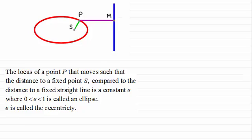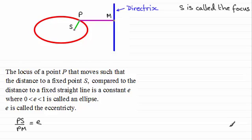Now that ratio PS to PM always equals that constant E, and you should be familiar with this straight line—it's called the directrix, and the point S here is called the focus.